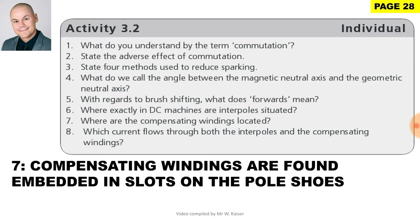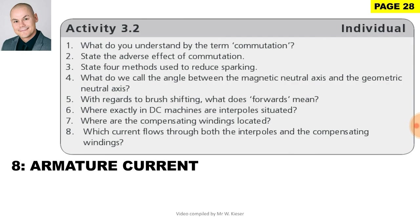Question 7: Where are the compensating windings located? Compensating windings are found embedded in slots on the pole shoes. Question 8: Which current flows through both the interpoles and the compensating windings? Armature current.